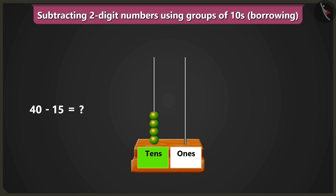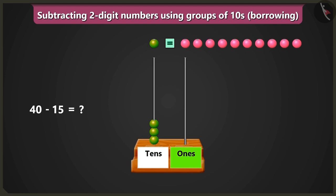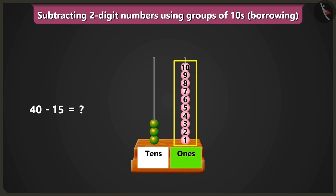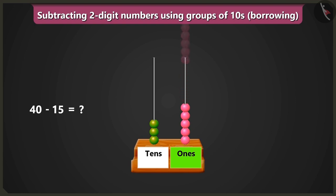So we will remove one bead from the box of tens, and we will put ten ones — meaning ten beads — in the box of ones. Now, to subtract fifteen from forty, first of all from the box of ones, we will remove one, two, three, four, and five beads. So one, two, three, four, and five beads would remain.